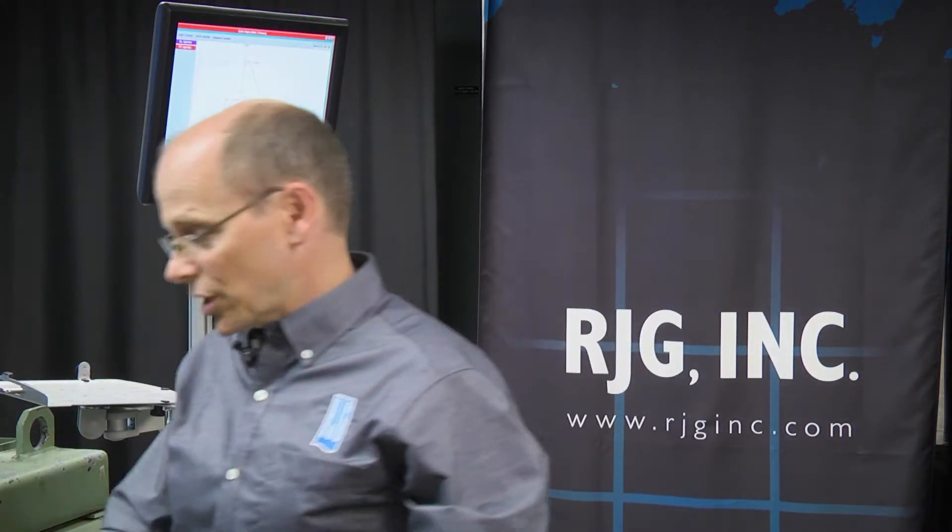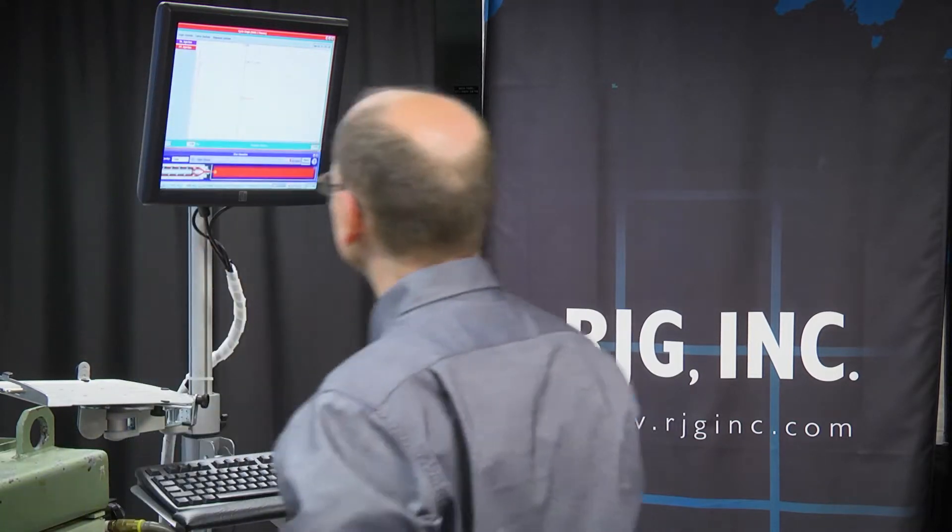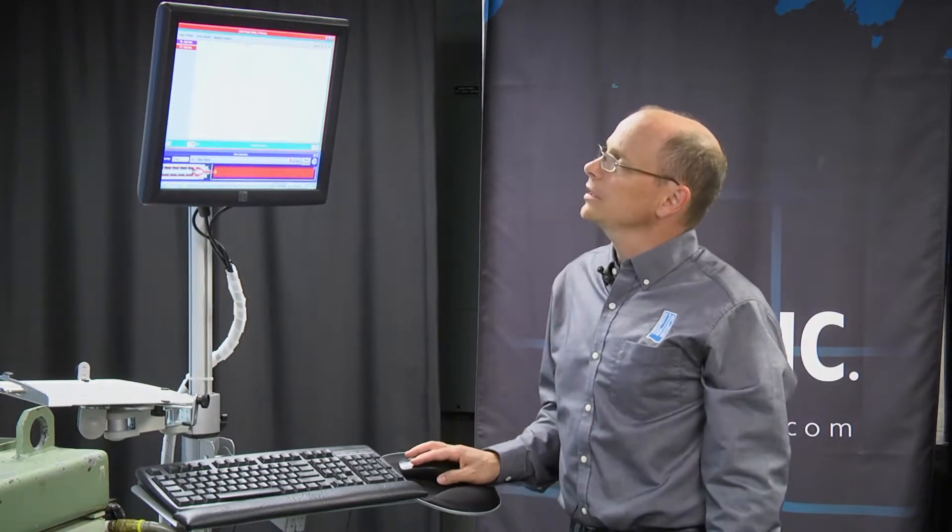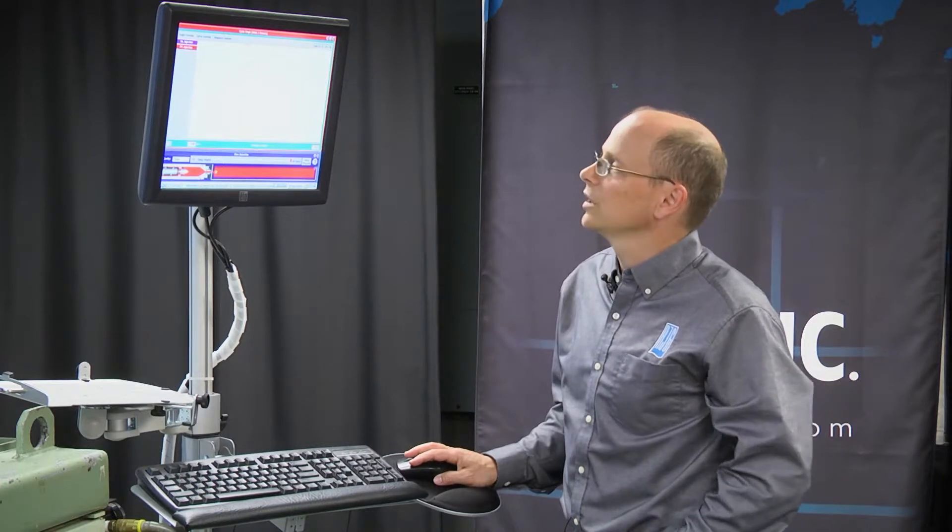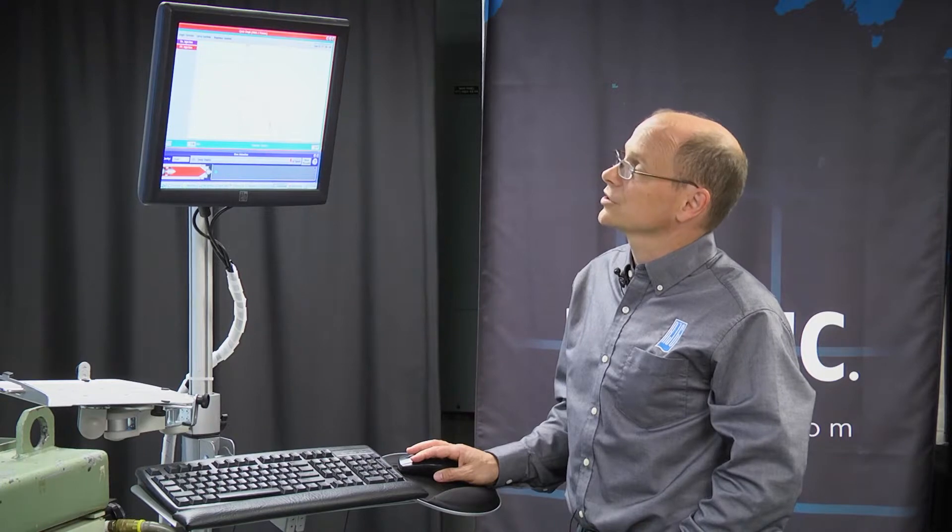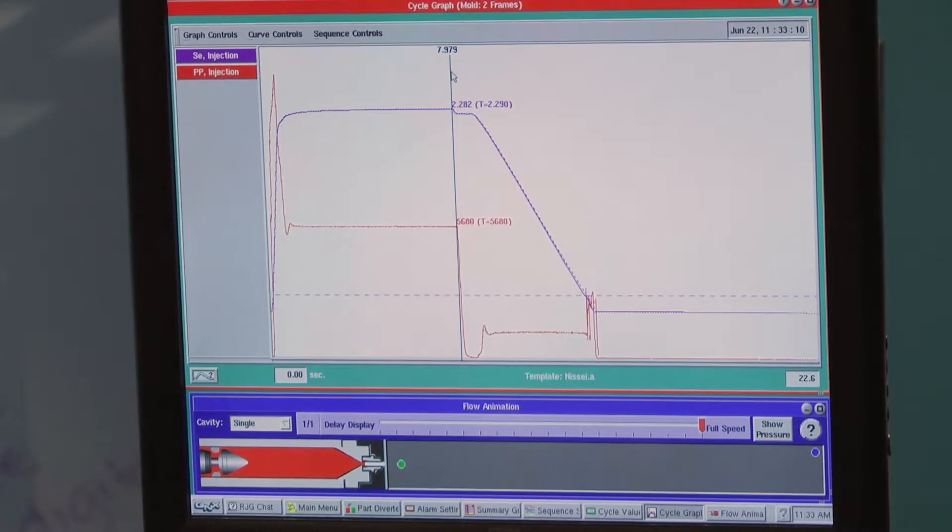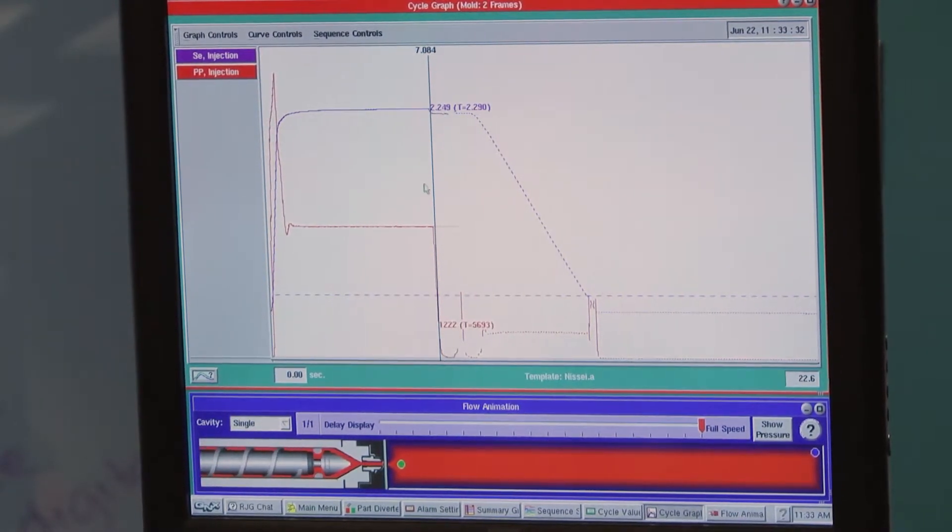If we change our injection forward time, that will show up here. We'll have to wait for the next cycle for that to take. Let's give the cycle just a moment. What do we expect to happen? Our injection forward was at 8 seconds. We changed it to 7 seconds. So we would expect that the curve would drop about right there.